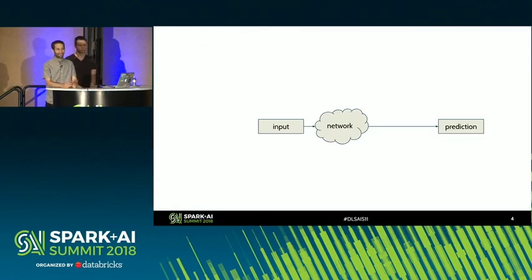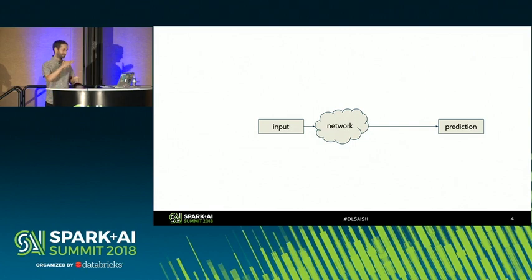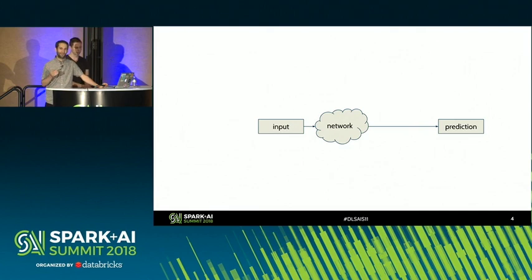It's the second day, so you've heard all about neural networks. A neural network just takes an input, which is a fixed-length array of numbers, and produces a prediction based on that. It's good for problems where it's possible to phrase your input as a fixed-length numerical array.